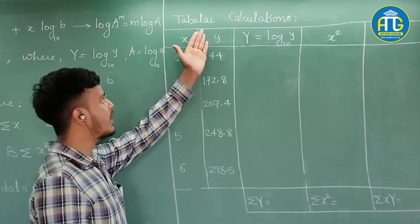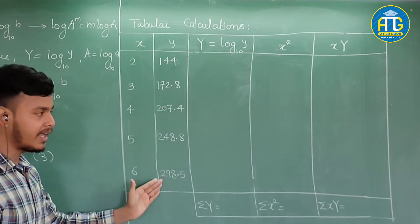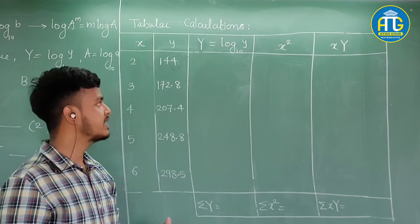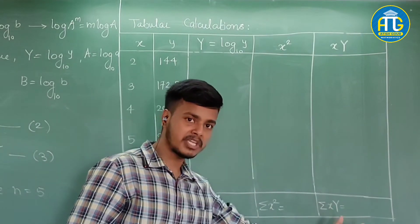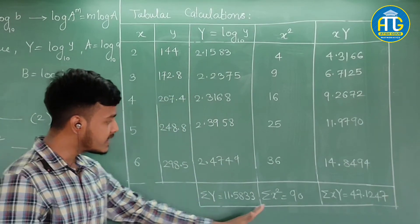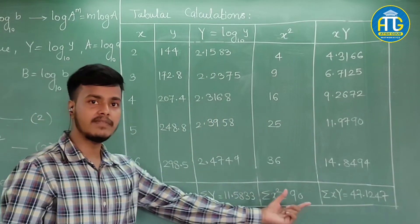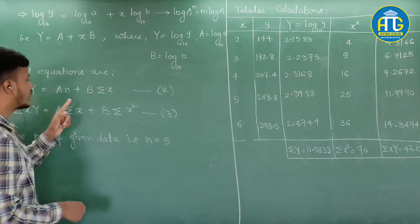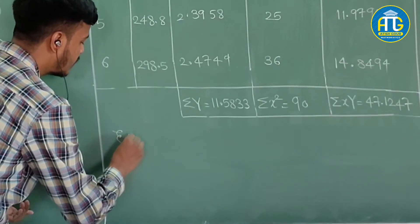In the tabular calculations, I have made a table and substituted the values of x and y. I want you to pause the video for a minute, try to find these summation values, and then resume the video. I hope you have done the calculations. If you are getting the same values, you can now substitute them into equations 2 and 3. So equation 2 implies: